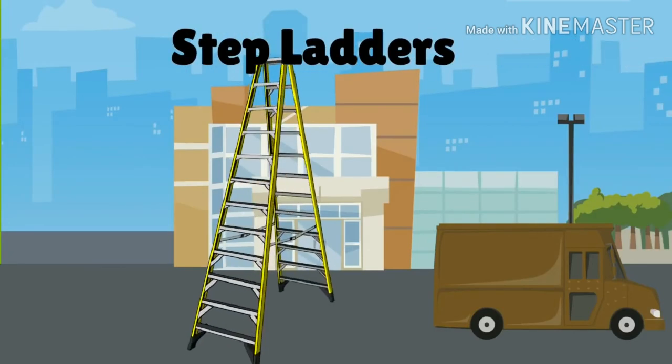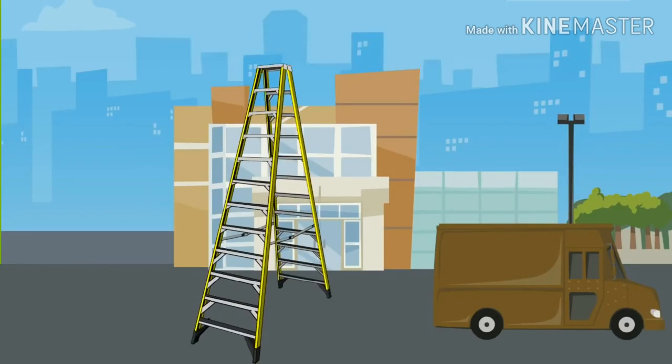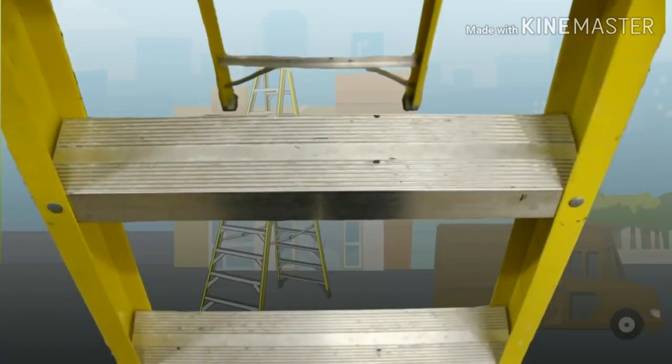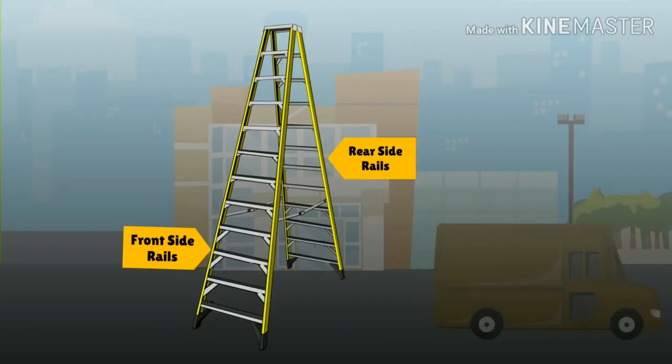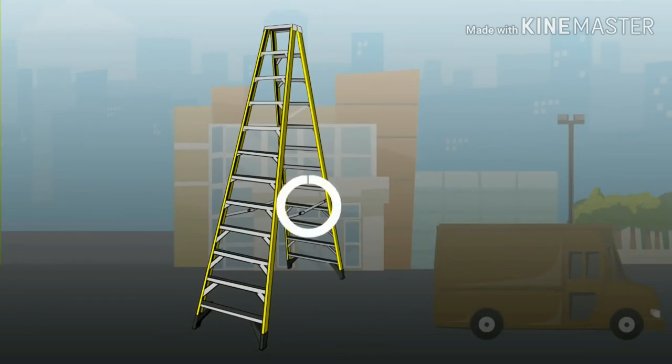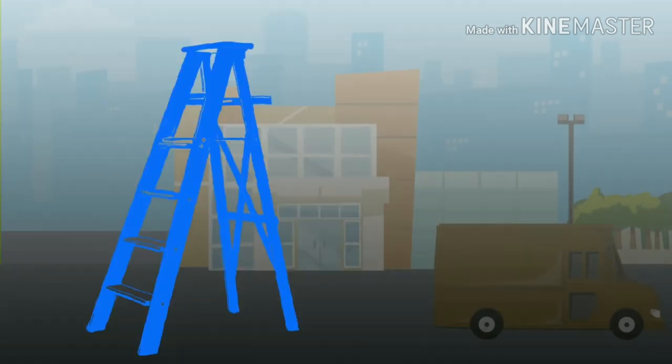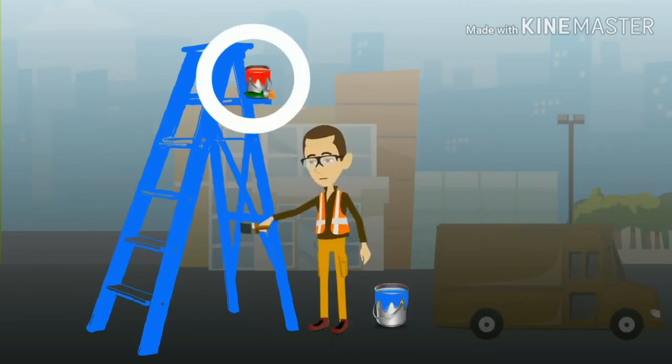Step Ladders: A step ladder is constructed with wide, flat steps and two pairs of rails connected by a hinge at the top and that opens at the bottom so it can be freestanding without being attached to or supported by something else. Lock spreaders secure the two pairs of legs. Ladders also include a shelf which can support paint cans or other objects while working.